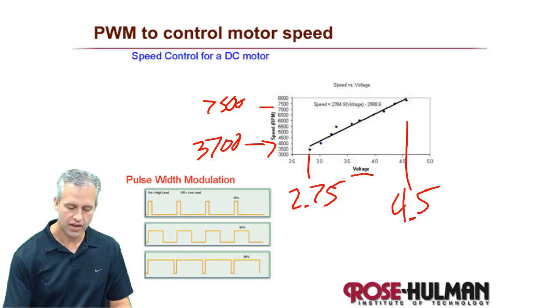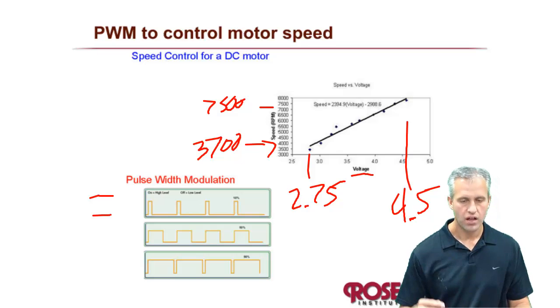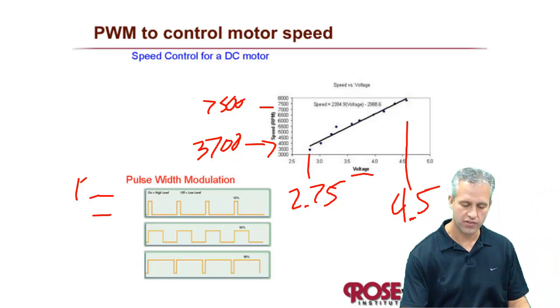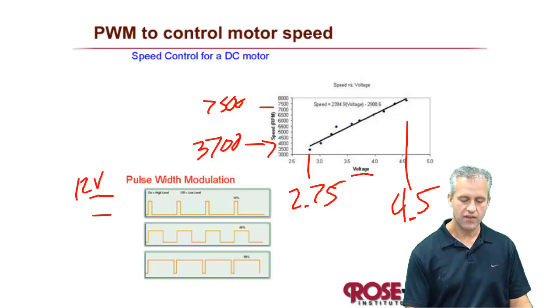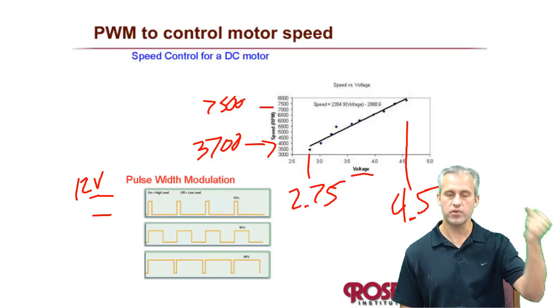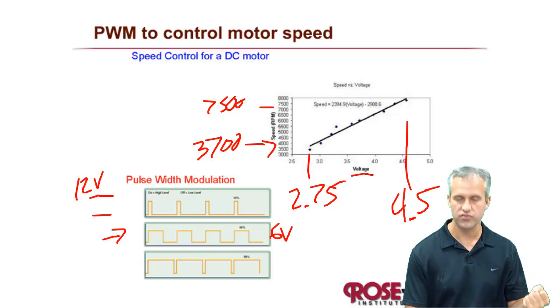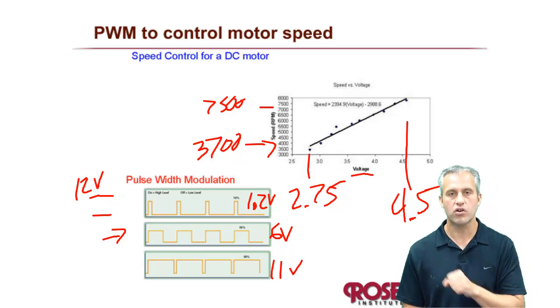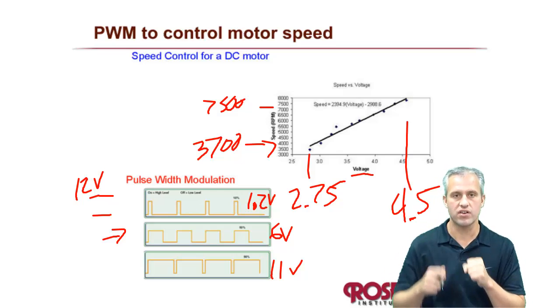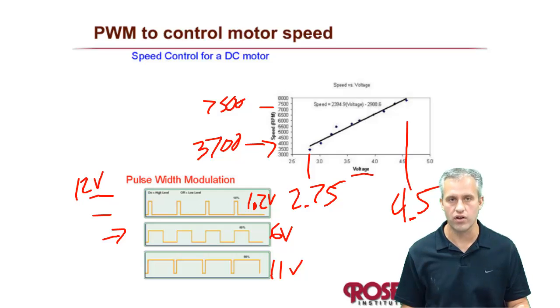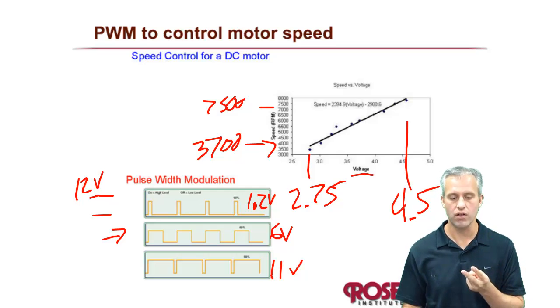But it turns out that if you are sending a signal, let's say you're controlling a MOSFET and that MOSFET's driving it at 12 volts. If you turn on that MOSFET at 100%, it gets 12 volts. If you turn it on at a 50% duty cycle, that effectively looks like 6 volts. And 10% effectively looks like 1.2 volts. And 90% looks like somewhere around 11 volts. So it turns out that if you turn it on and off fast enough, you can simulate having an analog output.